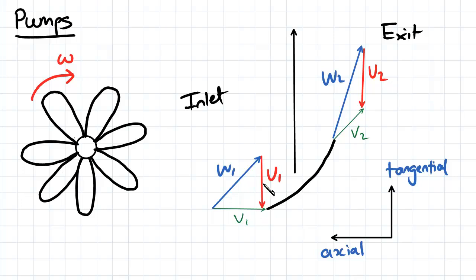When we exit the pump, we have new velocity components. Those velocity components are changed due to the axial velocity of our fluid and the tangential velocity of our pump.